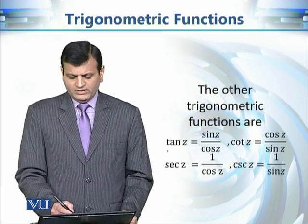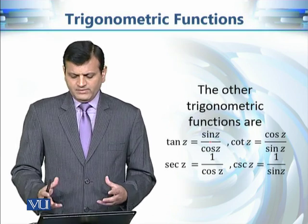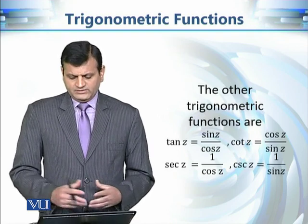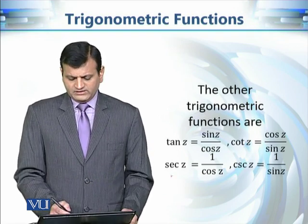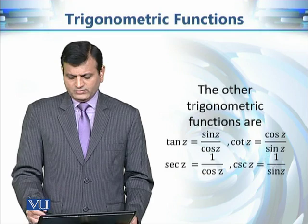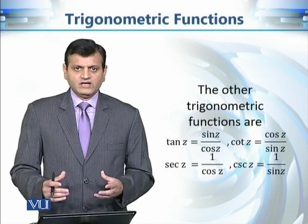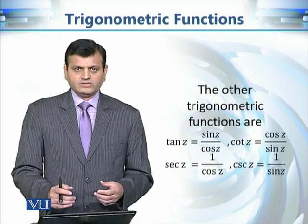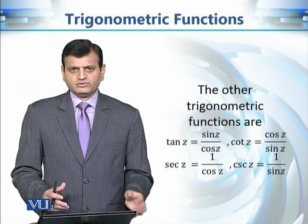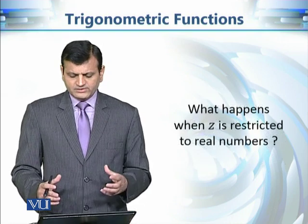On the same lines, we can define tan(z), csc(z), cot(z), and sec(z) using the same ratios: tan(z) = sin(z)/cos(z), cot(z) = cos(z)/sin(z), sec(z) = 1/cos(z), and csc(z) = 1/sin(z). Since we have defined sine and cosine via series, all other trigonometric functions can also be defined.